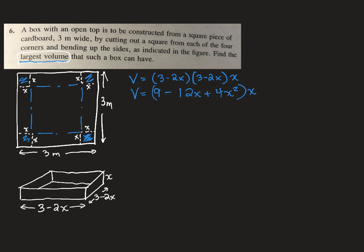That's all still multiplied by X. So we'll multiply that through. And I'm going to write it in descending order, 4X³ minus 12X² and then plus 9X.